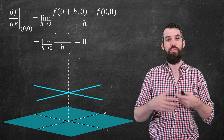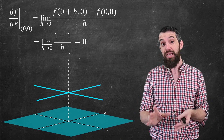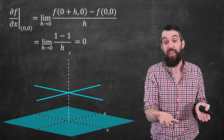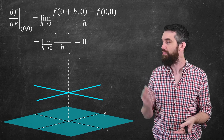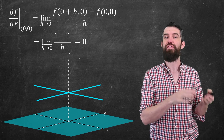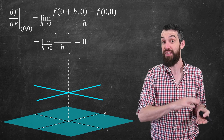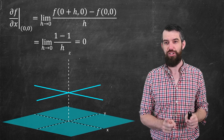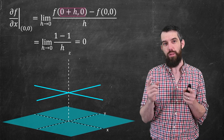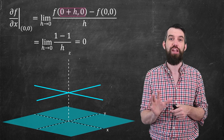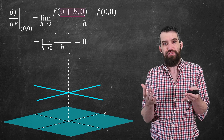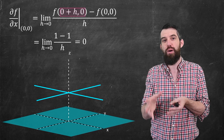Let's return to the example from the previous video — the cross function. This is a discontinuous function, but both partial derivatives exist because when you look down one axis or the other, the function just looks like one there — it's defined to be one along the axes. So the partial derivatives compute to a horizontal slope of zero. That was a problem because discontinuous functions should not be differentiable. The issue is that when computing the partial derivative, we only change x (or y) alone, which is a special case. When we change both x and y simultaneously — as in the definition of differentiability — the point shifts off the axes.